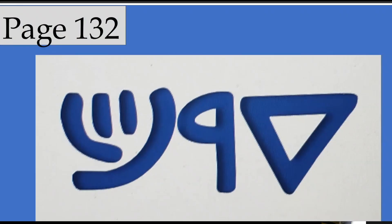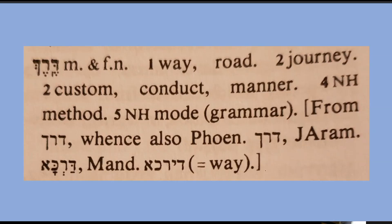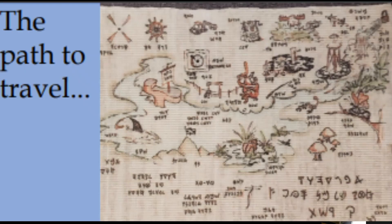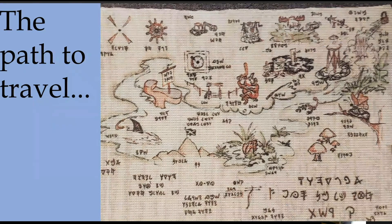On page 132, we'll look for Dalit-Resh-Kof, defined as way, road, journey, custom, conduct, manner, method, mode — as in grammar — and way. We have the path of Eric Bissell's map available on his website, an illustration of a treasure map showing the journey going Aleph through Tav — the path to travel through Yahuwah's words.